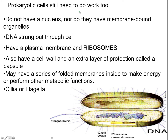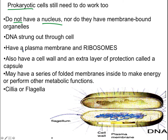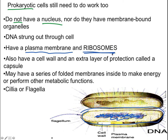That leads us to prokaryotic cells. Prokaryotic cells still need to do work — even though they're primarily bacteria, they still need to function. They do not have a nucleus, and they do not have membrane-bound organelles. So they don't have mitochondria, chloroplasts, or a nucleus. Their DNA is strung throughout the cell, just spread out in the middle. They do have a plasma membrane and they have ribosomes.